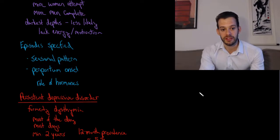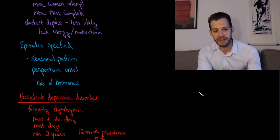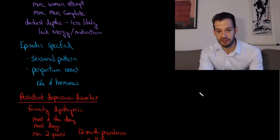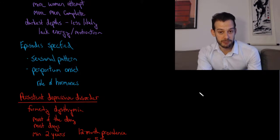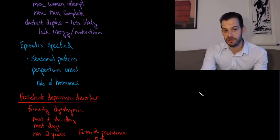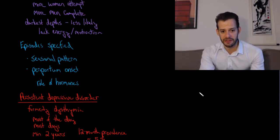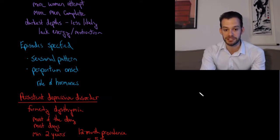And another pattern we see in episodes is what's called peripartum onset. And this refers to episodes of depression that occur just before childbirth or during pregnancy up until the weeks following childbirth. And you may also see this called postpartum depression.